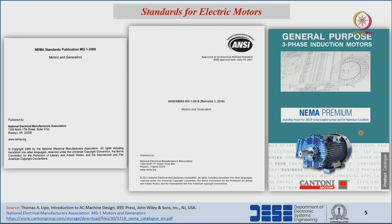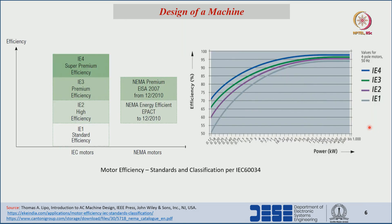The NEMA standards MG1 2009 and the revised 2018 version with approval date June 15, 2021 are available. With respect to efficiency classes, the IE4 standard represents very high efficiency; IE3 represents premium efficiency, slightly less than IE4; IE2 represents higher efficiency but less than IE4 and IE3; and IE1 represents standard efficiency — the lowest of the four classes according to IEC standards.